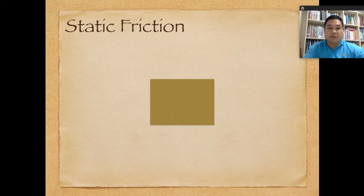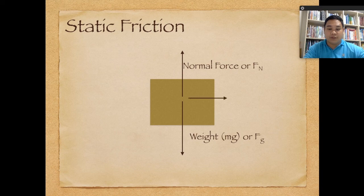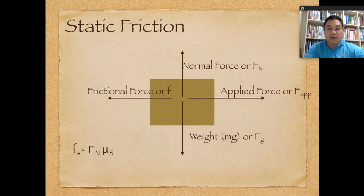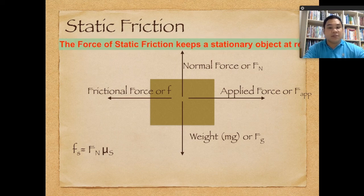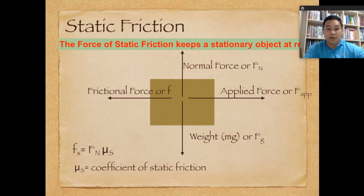There are two types of frictional force: static friction and kinetic friction. For static friction, with the box showing weight, normal force, applied force, and frictional force, we have: F-static equals normal force multiplied by the coefficient of static friction. The force of static friction keeps a stationary object at rest. We represent the coefficient of static friction as mu sub s, defined as the ratio of frictional force to normal force.